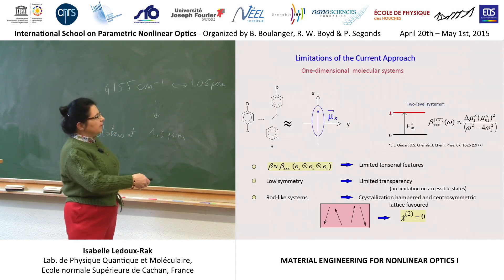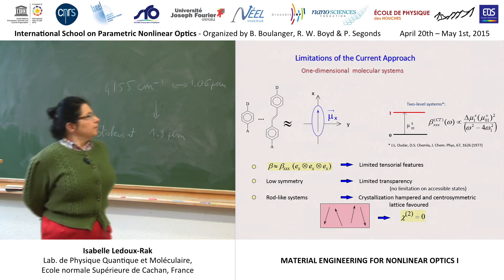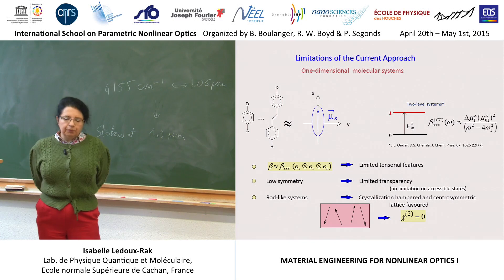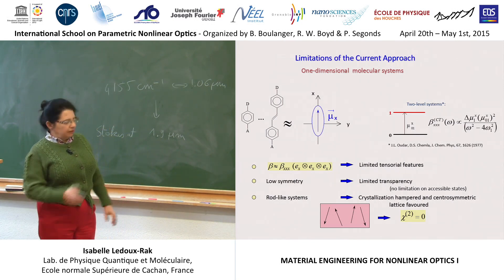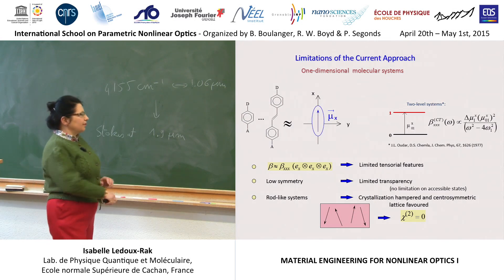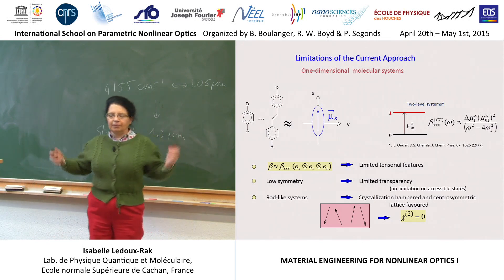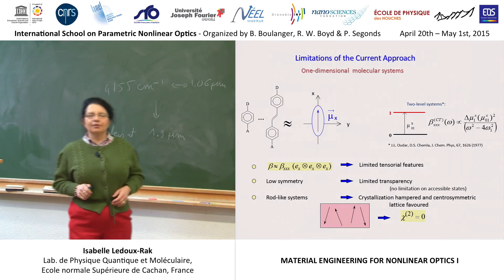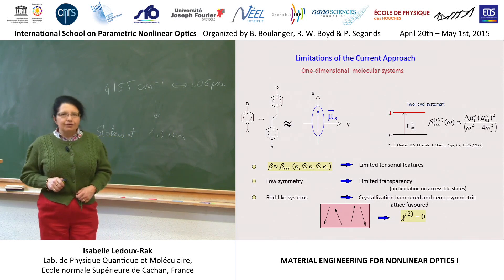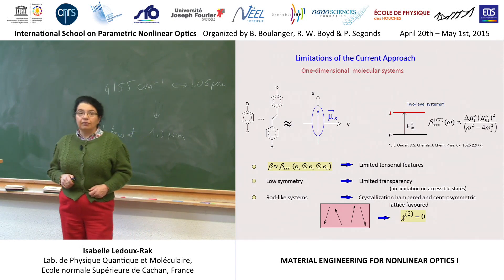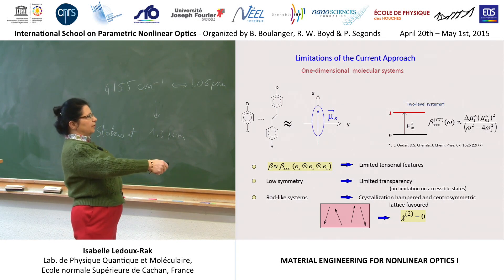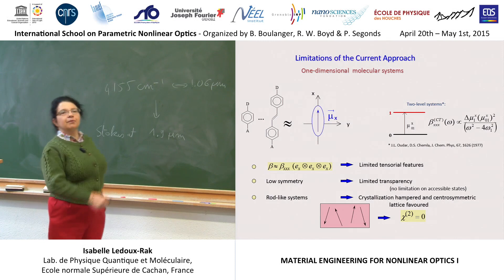Now we have probably optimized the dipolar nonlinear response, but there are limitations. Beta is a third-rank tensor corresponding to 27 independent Cartesian components in three dimensions, and it's a pity to limit ourselves to one dimension when the world is three-dimensional. The expression corresponding to the purely dipolar term is very limited to one single component of the beta tensor. Also, with relatively low symmetry of dipoles, the transparency is limited because increasing symmetry makes some levels not allowed for one-photon transitions, increasing transparency.